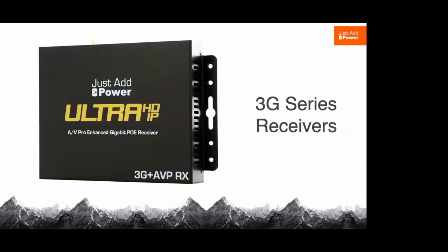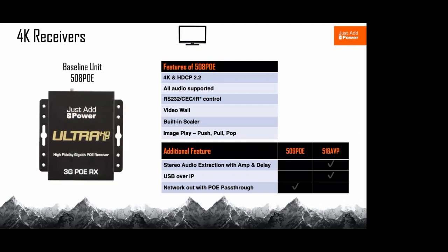Just Add Power receivers — we won't spend a ton of time. We start at the base unit, the 508 PoE — the most basic receiver and our most popular one. From there: do we need USB, audio extraction, or PoE and network pass-through? That's how we decide what makes sense per zone. When you buy into the Just Add Power ecosystem you're not buying into a series — all our stuff works together, so you just pick what you need per zone.